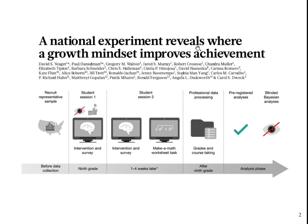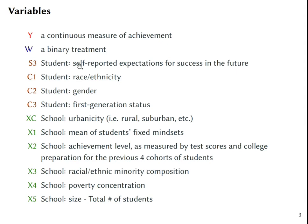In particular, this experiment was looking at the heterogeneity in treatment effects — who is susceptible to this growth mindset? The variables used were Y, a continuous measure of achievement; W, binary treatment; S3, a student self-reported expectations for success in the future; and then some characteristics about the student like race and gender, school characteristics like whether the school is rural or suburban, the share of students with fixed mindset in that school, achievement level at the school level, racial-ethnic composition, poverty concentration, and so on.